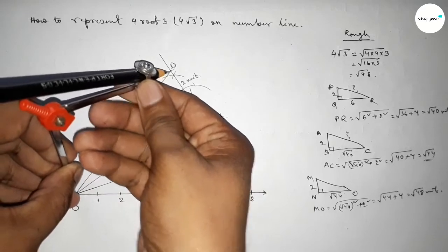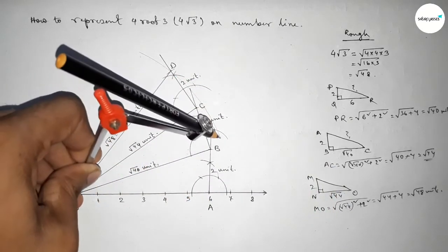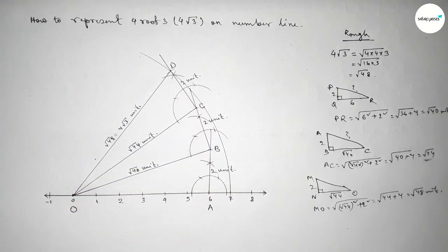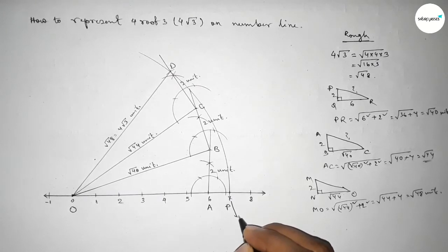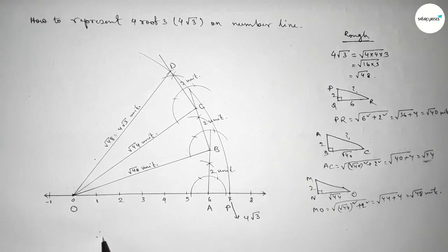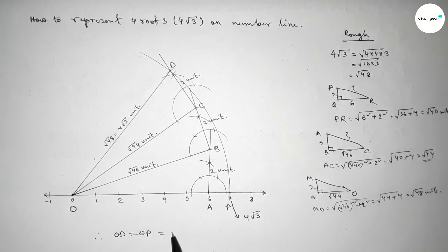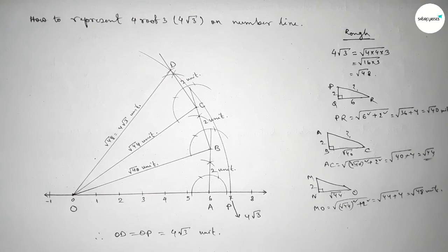Taking length OD = 4√3 units and drawing an arc which meets the number line at point P. So P represents 4√3 on the number line. Therefore distance OD = OP = 4√3 units. That's all, thanks for watching. If this video is helpful to you, please share it with your friends.